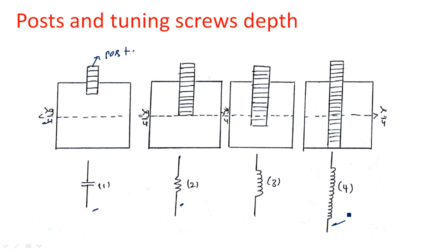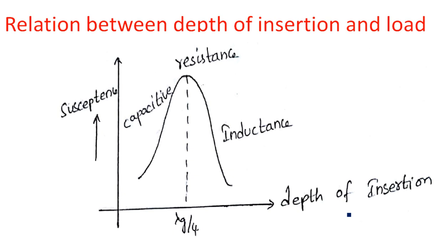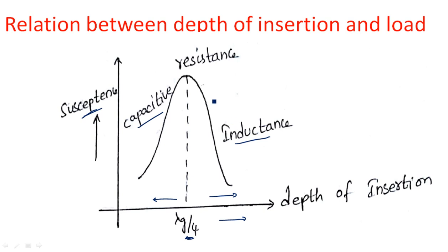Tuning screws work similarly — a screw is inserted and depending upon the insertion, some load is created. The graph shows depth of insertion on the x-axis and susceptance on the y-axis, with lambda-g by 4 being the center of the waveguide. If insertion is less than lambda-g by 4, it behaves like a capacitor component; if greater than lambda-g by 4, it behaves like an inductive component; and if exactly lambda-g by 4, it is a resistive component.